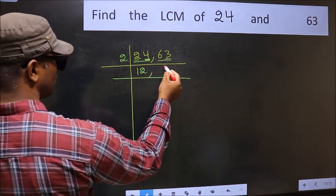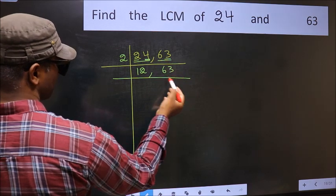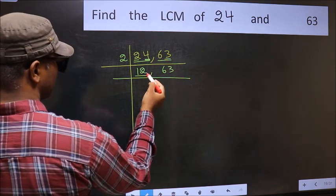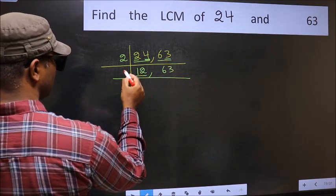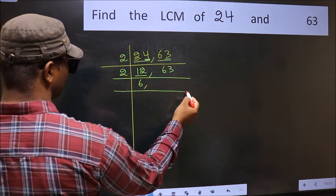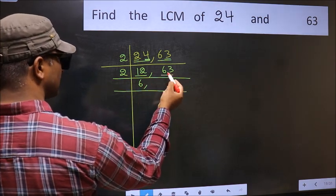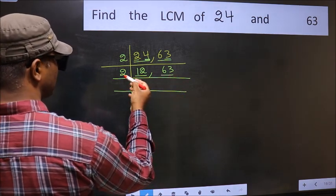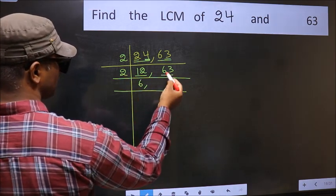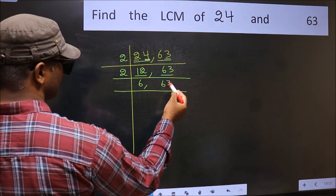Now here we have 12. 12 divided by 2 is 6. The other number 63 is not divisible by 2, so you write it down as it is.